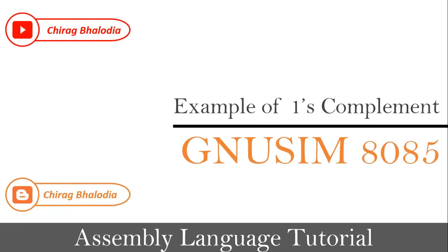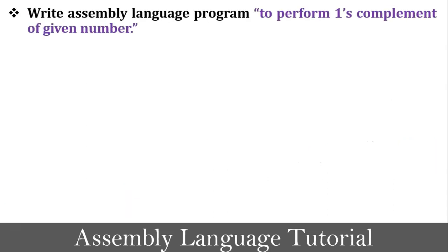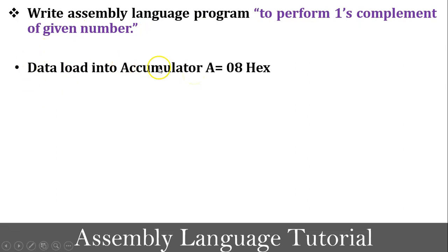The next topic is an example of one's complement using the programming concept. The program definition is: write an assembly language program to perform one's complement of a given number. Our first task is to load data into the accumulator — for example, 08 is stored into the accumulator. The instruction for this is MVI A, 08.